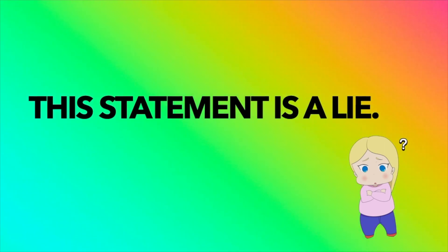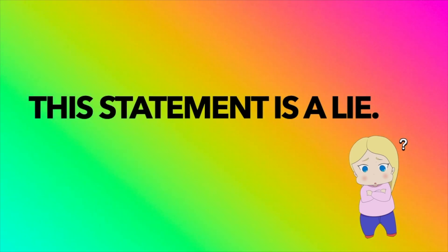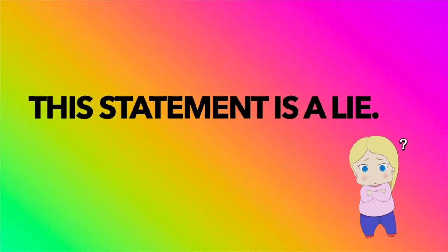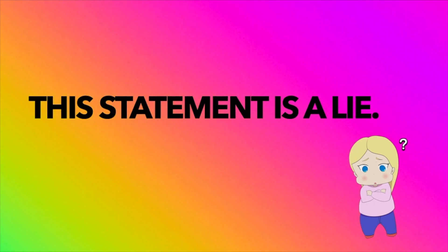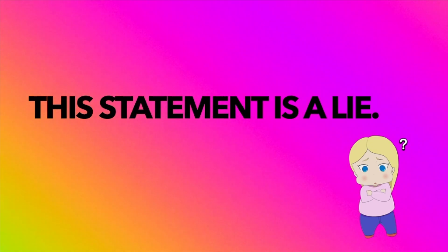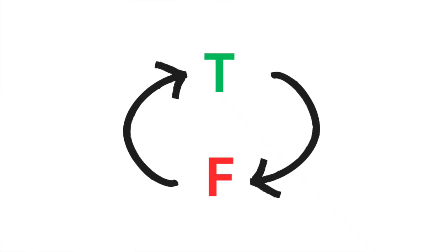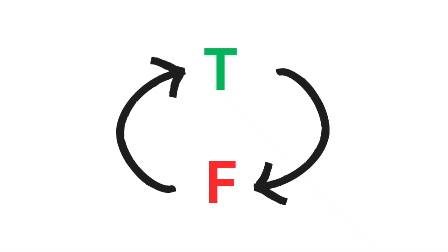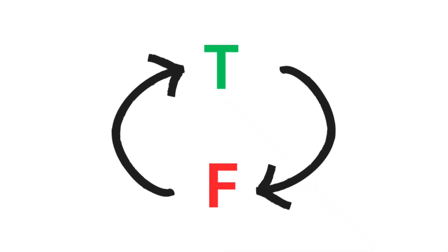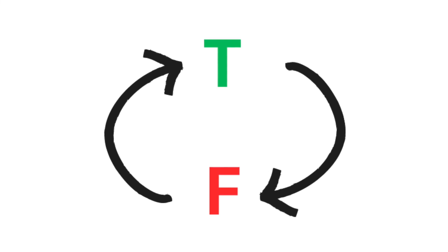This statement is a lie. If the statement is true, then it is true that it's a lie, and so the statement is false. But if it's false, then it's false that it's a lie, so the statement must be true. This is known as the liar paradox — a paradoxical loop that defies logical resolution.